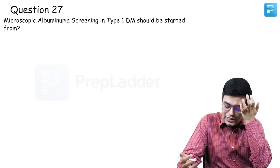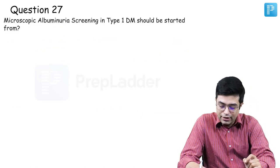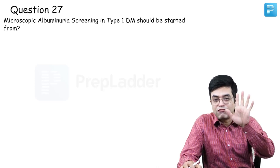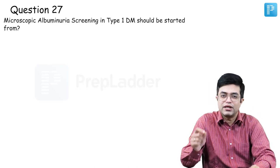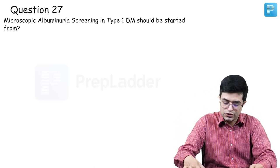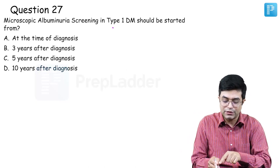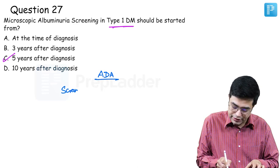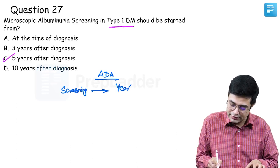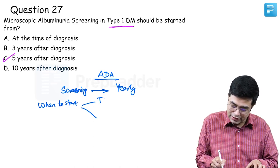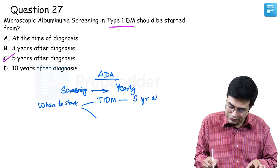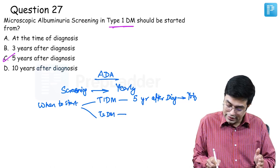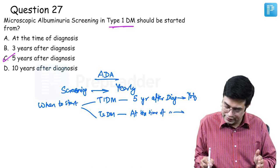Question number twenty-seven: microalbuminuria screening in type 1 diabetes mellitus — when to start? According to American Diabetes Association guidelines, in type 1 diabetes mellitus, screening should be started 5 years after diagnosis and done yearly. In type 2 diabetes mellitus, it should be started at the time of diagnosis and done yearly. Answer: 5 years after diagnosis for type 1 diabetes mellitus.